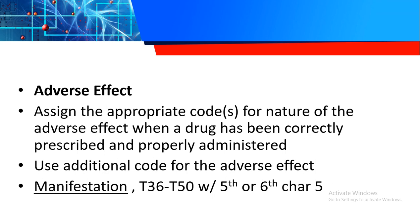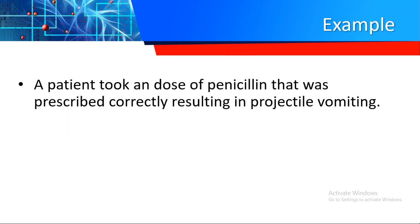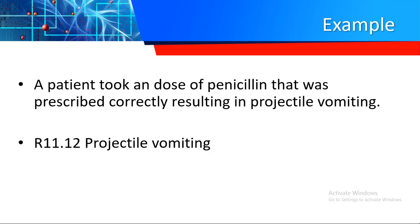Adverse effect: assign the appropriate code for the nature of the adverse effect when a drug has been correctly prescribed and properly administered. Your first code should be the nature of the adverse effect — the manifestation, such as tachycardia or delirium — followed by the adverse effect code, where the sixth character is usually five in the table of drugs. Example: a patient took a dose of penicillin prescribed correctly, resulting in projectile vomiting — code first projectile vomiting, followed by the adverse effect code for penicillin.